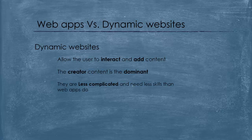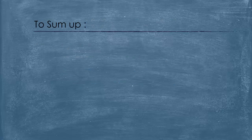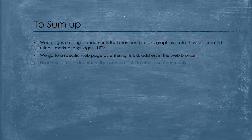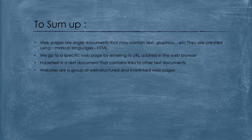And of course, they are less complicated. So to sum up, we've seen that web pages are single documents that may contain text, graphics, etc., and they are created using a markup language such as HTML. We go to a specific web page by entering its URL address in the web browser. Hypertext is a text document that contains links to other text documents. We've also seen that websites are a group of well-structured and interlinked web pages, and that we move from page to another using hyperlinks. Also, there are two types of websites: static and dynamic.